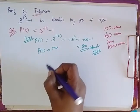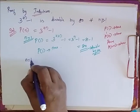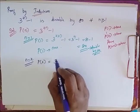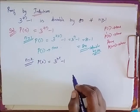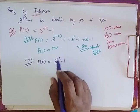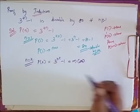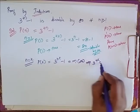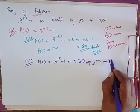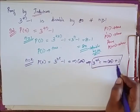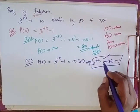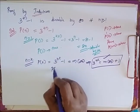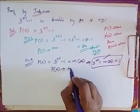Since P of 1 is true, I say that P of K is also true. So P of K equals 3 power 4k minus 1, and since it is true, I say that it is some multiple of 80. I can rewrite this as 3 power 4k equals some multiple of 80 plus 1. Keep this in mind — it will be used in further proof. P of K is also true.